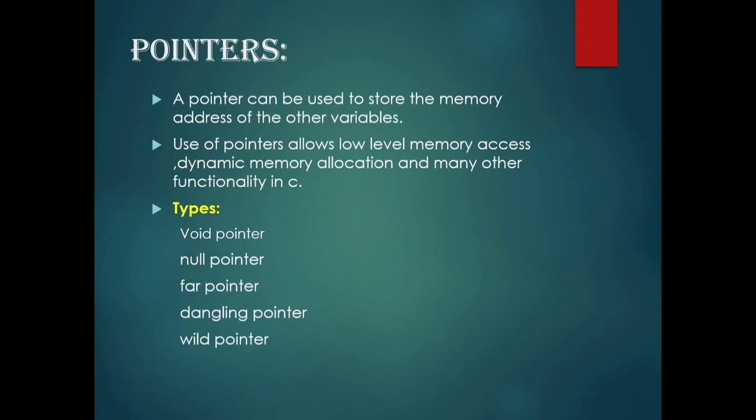Pointers: A pointer can be used to store the memory address of other variables. Use of pointers allows low-level memory access, dynamic memory allocation, and many other functionalities in C. Types of pointers include: wild pointer, null pointer, far pointer, dangling pointer, and void pointer.